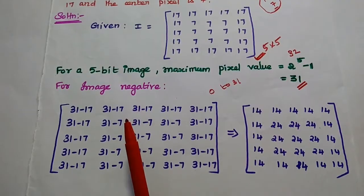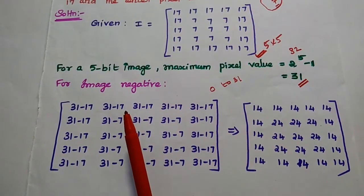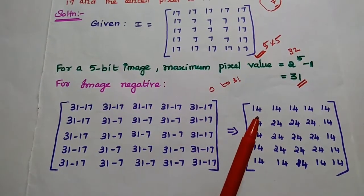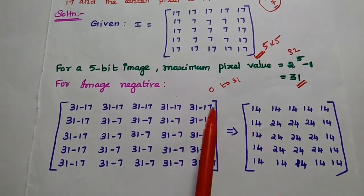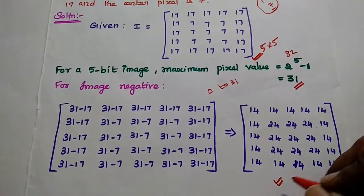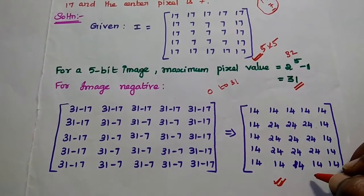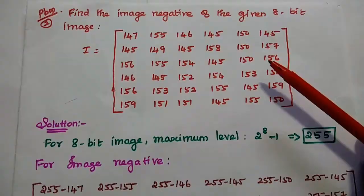For the image negative, we subtract each pixel value from the maximum pixel value of 31 at the same position. This gives the final answer. It is a very simple concept.